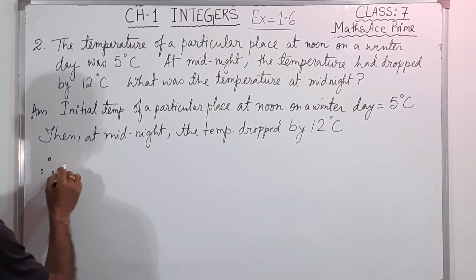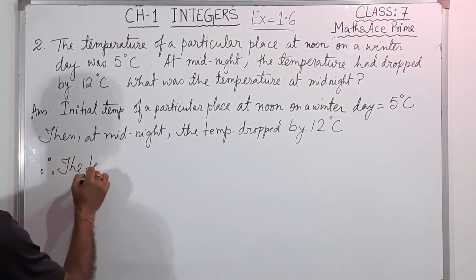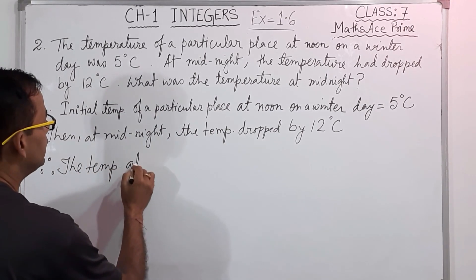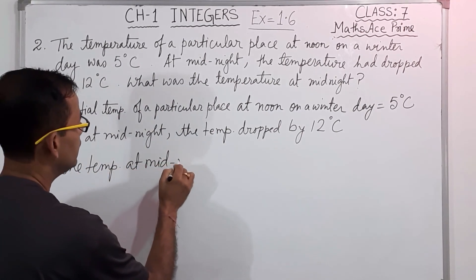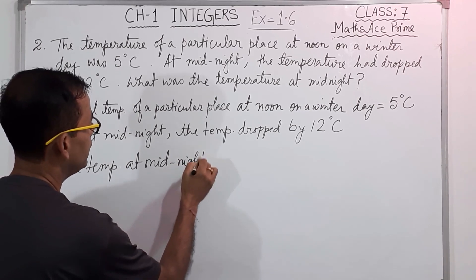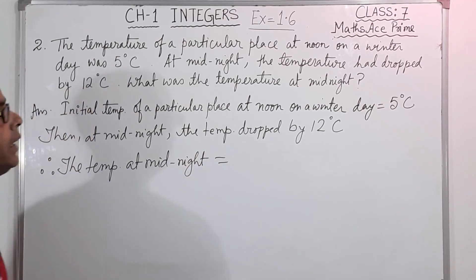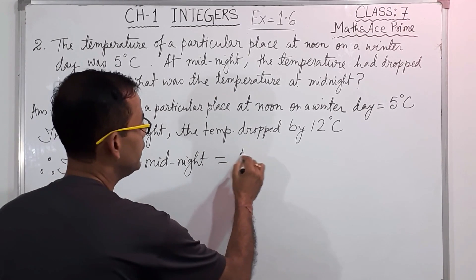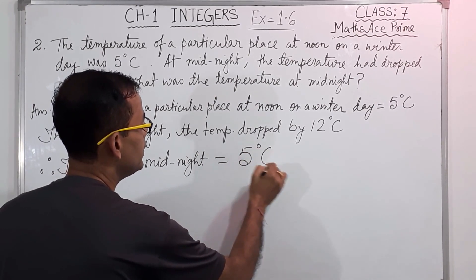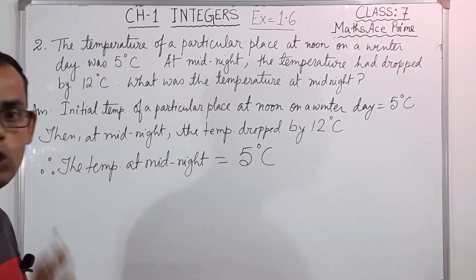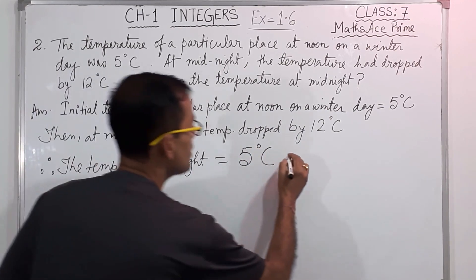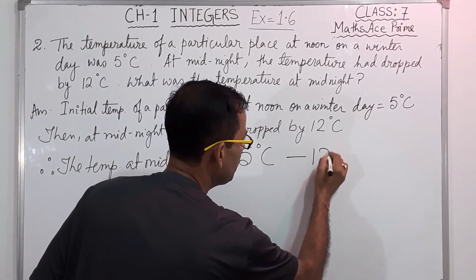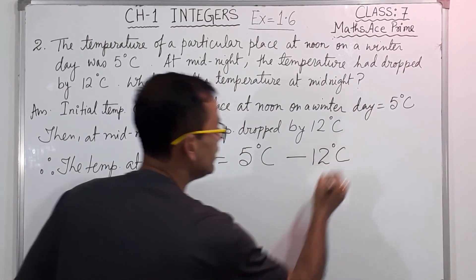Therefore, the temperature at midnight equal to, so first it was what? Initial, it was 5 degrees Celsius. Then it dropped, that means subtract, how much it dropped? 12 degrees Celsius.